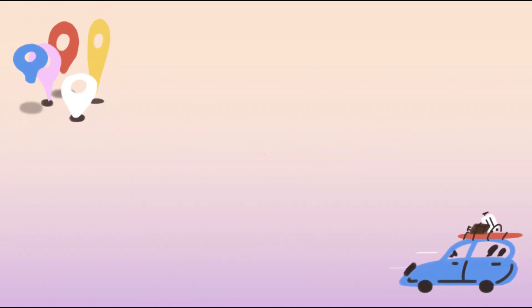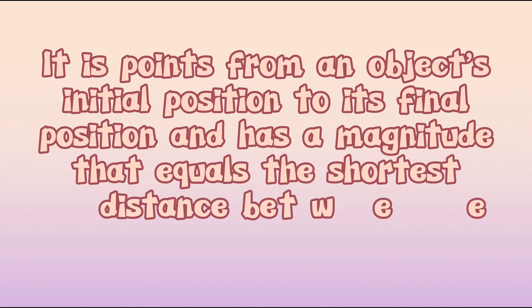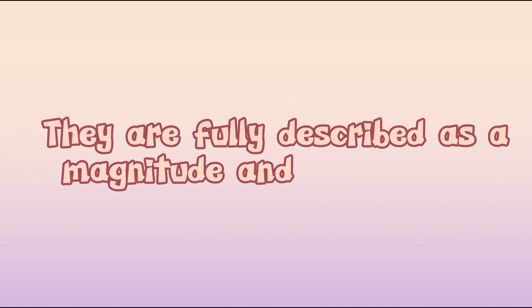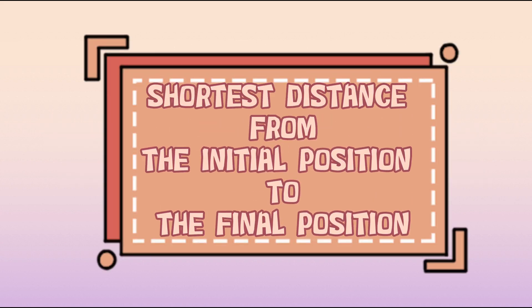Let's move on to the next one. What is displacement? It points from an object's initial position to its final position and has a magnitude that equals the shortest distance between the two points. Displacement is said to be a vector quantity — they are fully described by a magnitude and a direction. Displacement is the shortest distance from the initial position to the final position.